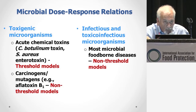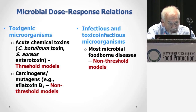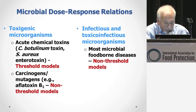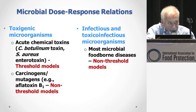If you're talking about a toxigenic organism — one where it's producing a chemical within the food that is then ingested, such as Clostridium botulinum neurotoxin or Staph aureus enterotoxin — these are amenable to a threshold model, and so you can actually do a safety assessment with these organisms. The exceptions are if the chemical produced is a carcinogen; then you're out of the threshold model and need to fall back to a non-threshold model, similar to what Joe was talking about.